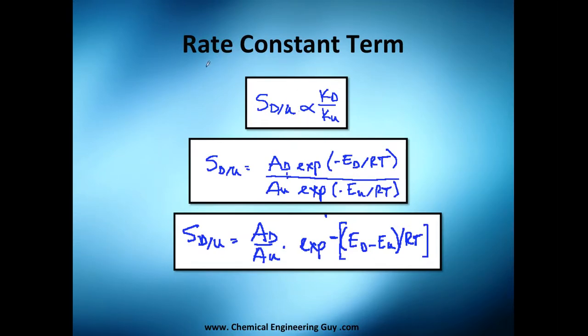It's time to analyze the rate constant term in our selectivity concept. Remember we got previously the desired and undesired concentration alpha one versus K_u times C_a alpha two. We've already analyzed this, forget about this.